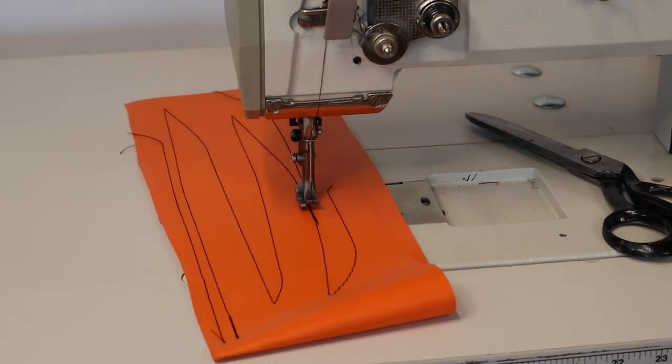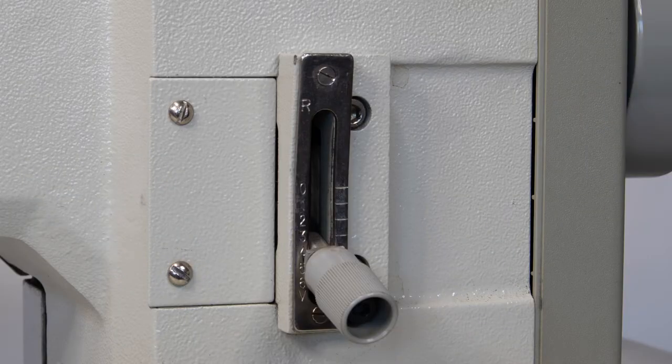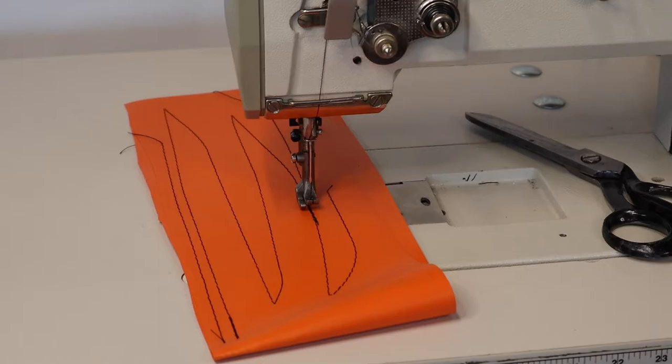This machine has a really nice toggle style reverse lever so that you can back tack at the beginning and end of your seams. Here's how it works.